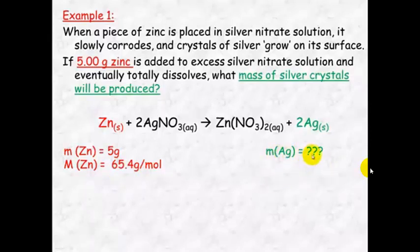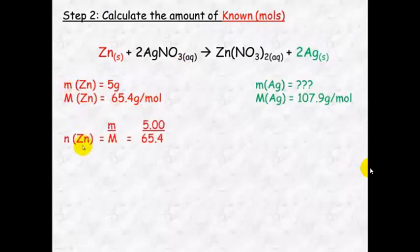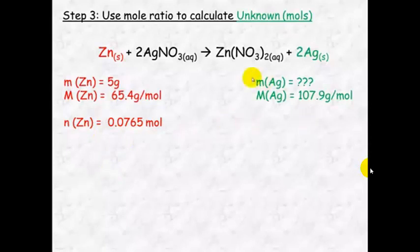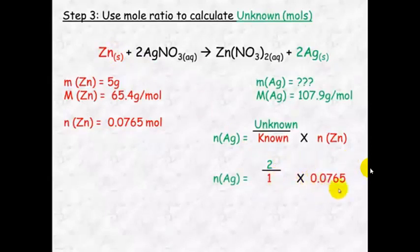We're trying to work out the mass of the unknown, and we know the molar mass from the periodic table. Step two is to calculate the amount of the known in moles. So n = m/M, which equals 0.0765 mol. Now that we've got the number of moles of zinc, we can work out using the mole ratio — remember it's a one to two mole ratio — how many moles of silver there will be. The number of moles of silver equals the mole ratio of unknown over known: two over one, times the amount of zinc, which equals 0.153 mol.